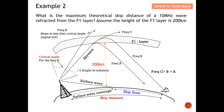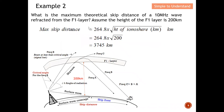Example two: what is the maximum theoretical skip distance of a 10 MHz wave reflected from the F1 layer, assuming the height of the F1 layer is 200 km? The skip distance is the largest distance within which a radio wave cannot reach — any point inside the skip distance cannot be contacted by that radio wave. This question asks us to calculate that skip distance given a frequency of 10 MHz and an F1 layer height of 200 km.